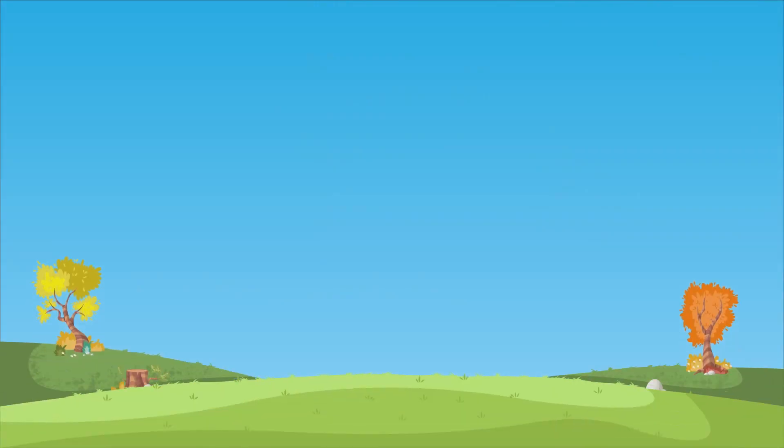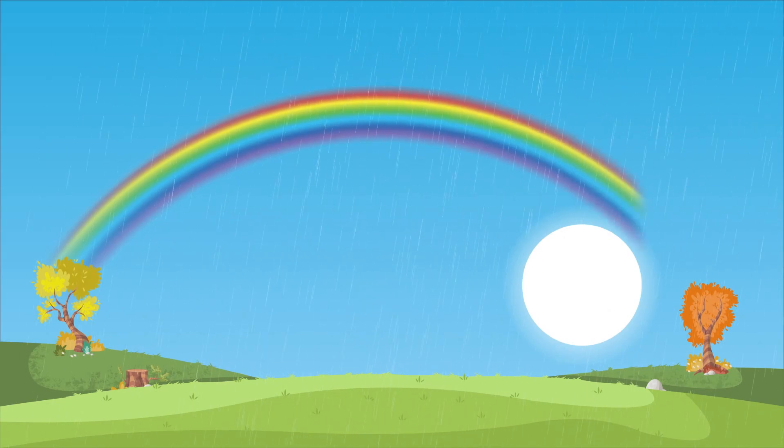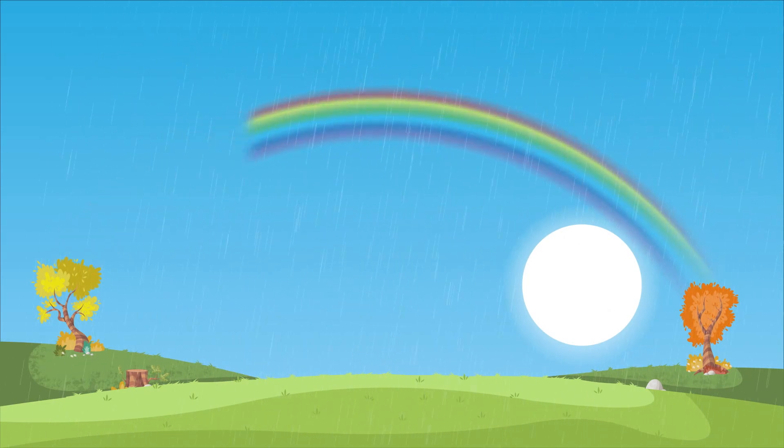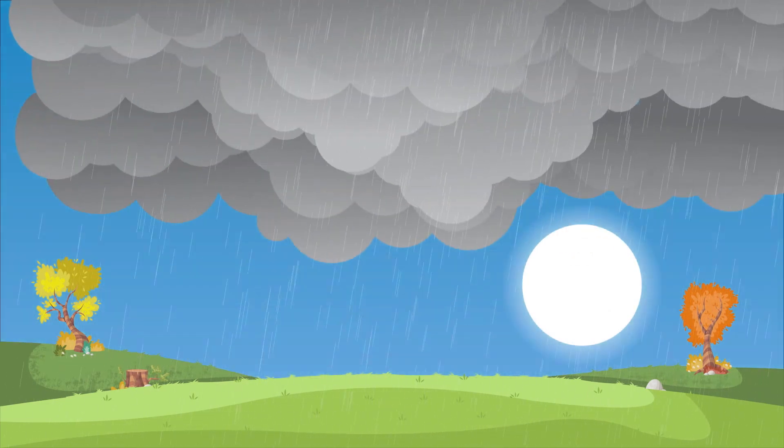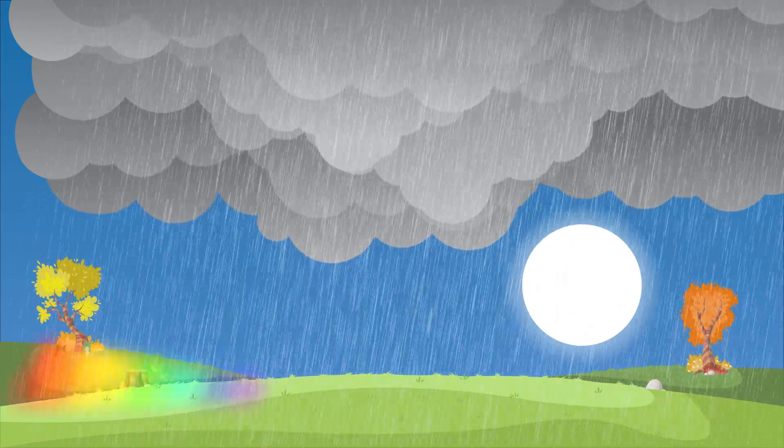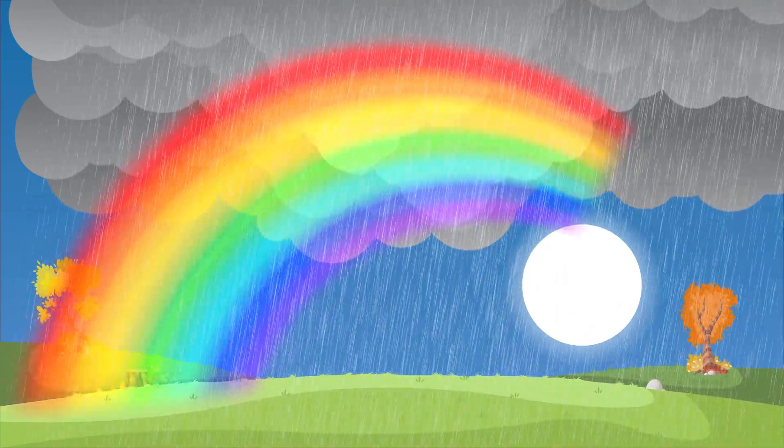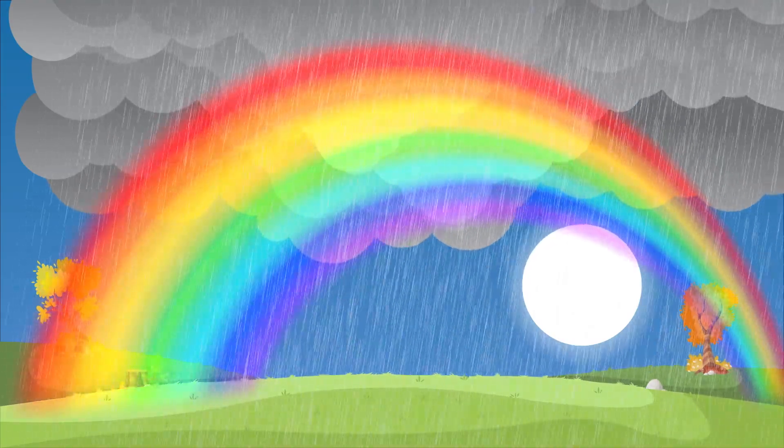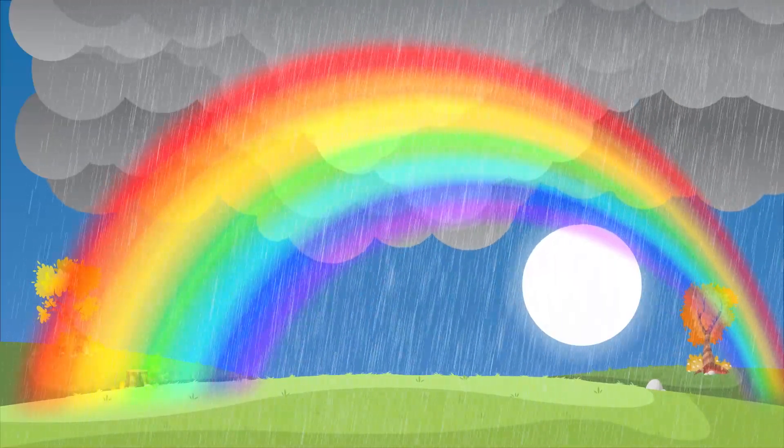You can see a rainbow any time there's water droplets in the air and the sun is shining behind you at a nice low angle. The most vivid and visible rainbows occur while the sky is still dark and stormy. The sun shining on a dark background makes for an extra bright and colorful sight.